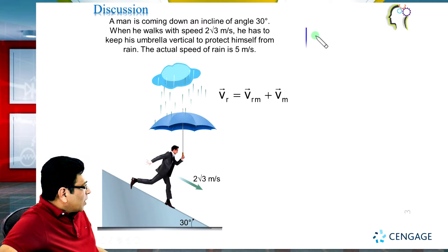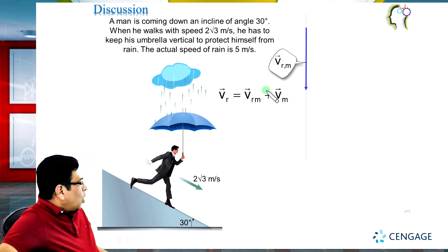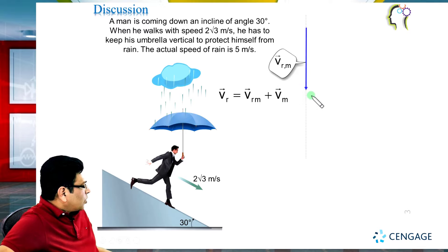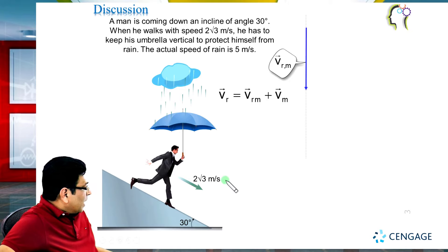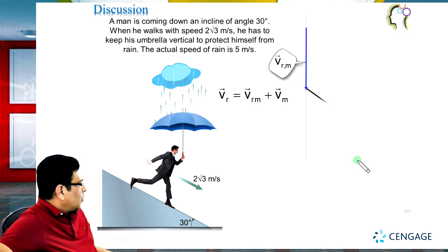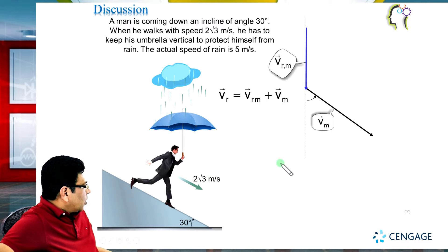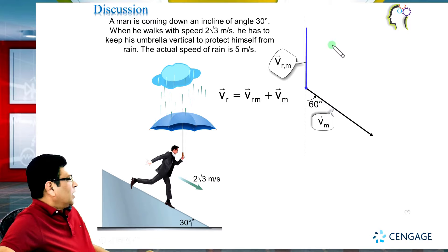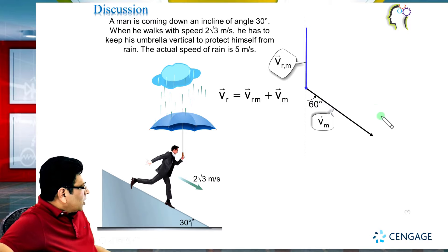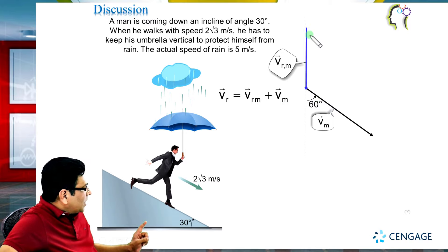This line will represent the velocity of rain with respect to man. Now we can add the vector representing the velocity of the man. The magnitude is 2√3 and the direction is along the incline — 30 degrees from horizontal and 60 degrees from vertical. If we join the remaining two points, that vector will represent the actual velocity of the rain.